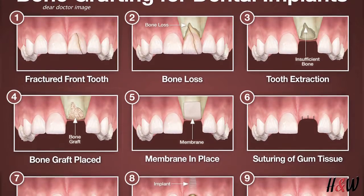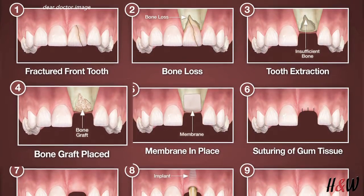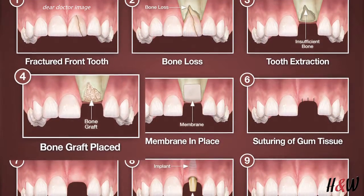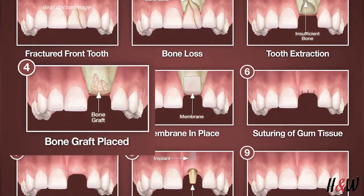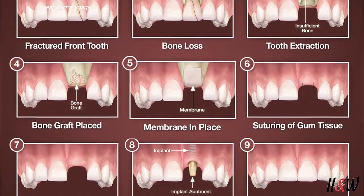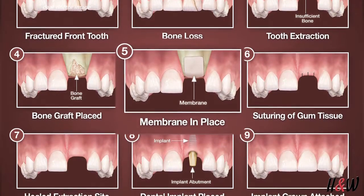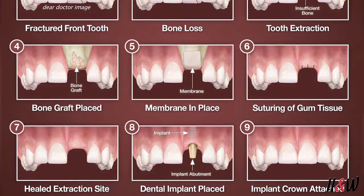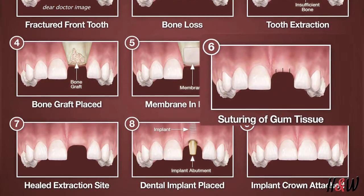Once that's completed, we take the bone graft material that we've chosen and place it in the socket all the way up to the level of bone that exists there, unless we want to add more bone, in which case we place it where we need it. We then place what we call a membrane over the top of the bone to protect it and prevent skin cells from growing into that graft material while it heals. Then we simply suture over the top to hold everything together while the healing process takes place.